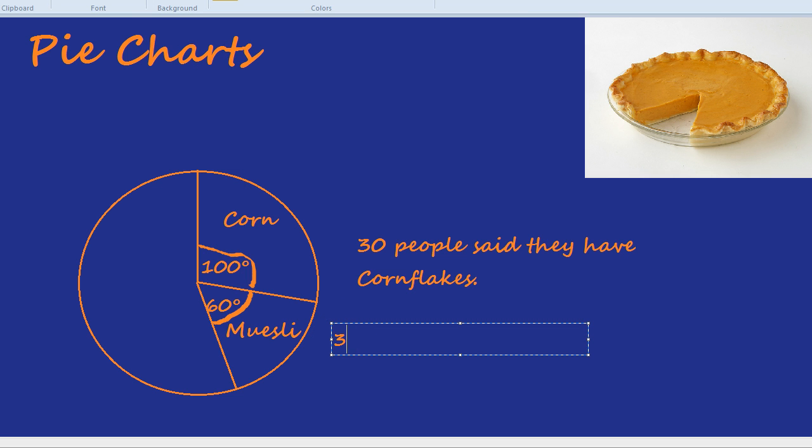Here's how. We had 30 people who liked cornflakes and that equaled 100 degrees. The secret is in the angle. How many people liked muesli? Well, if 30 people is 100 degrees, what's 10 degrees? Always try and find out what 10 degrees or 1 degree is and that will solve the entire mystery.